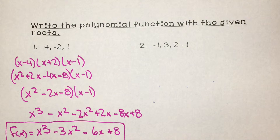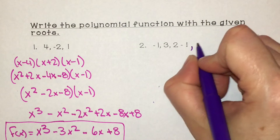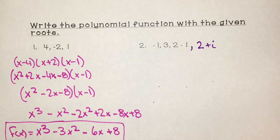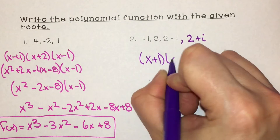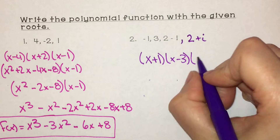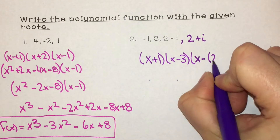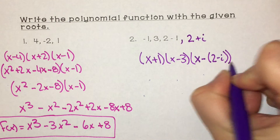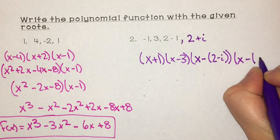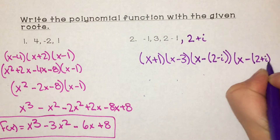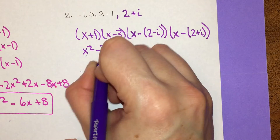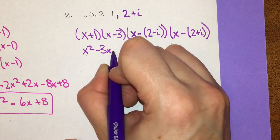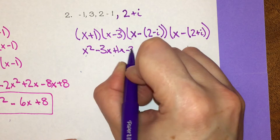Continuing with the multiplication and combining like terms, we get f of x equal to that polynomial function. For the last practice problem, we have one more root: 2 plus i, meaning its conjugate 2 minus i is also a root. So our factors are x plus 1, x minus 3, x minus 2 minus i, and x minus 2 plus i.